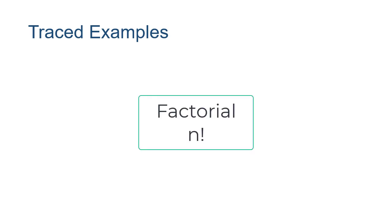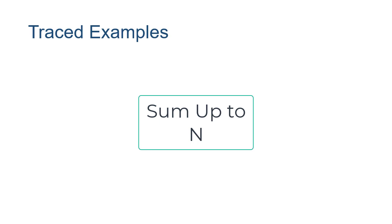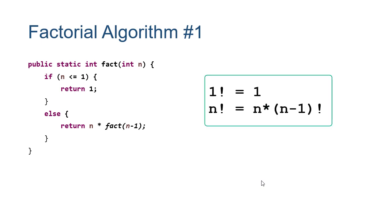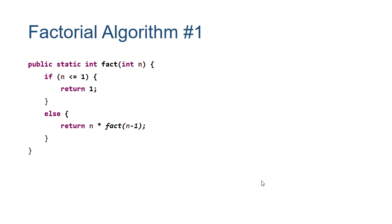We're going to see three examples in this video: first factorial, then a toy example, and then a function that computes the sum of numbers up to n. Our first example will be the naive recursive version of factorial. Naive recursion means it's a more direct translation of the mathematical recursive definition into code, and we'll contrast that with the tail recursive version.